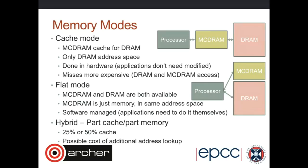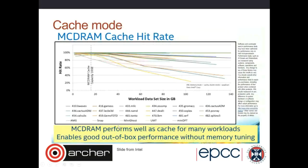Intel has provided graphs showing that for a range of benchmarks, cache mode does quite well for initial performance work without requiring application changes. However, for larger datasets, cache performance can tail off. Some applications will see a performance hit in cache mode if data is streaming from main memory through MCDRAM to the processor without being reused in the cache — in that case, direct main memory access would be faster.